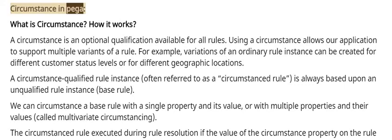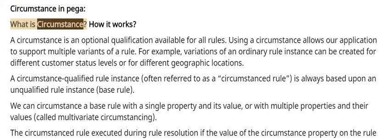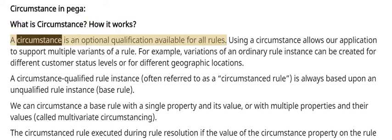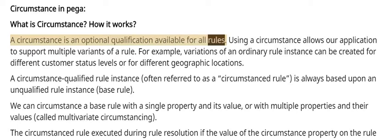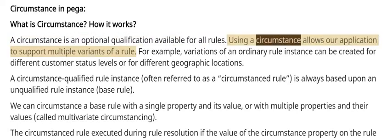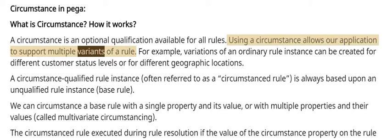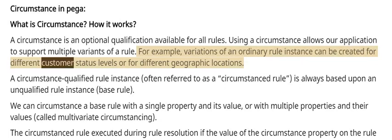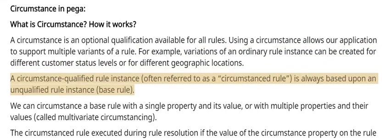Circumstance in PEGA. What is a circumstance and how it works? A circumstance is an optional qualification available for all rules. Using a circumstance allows our application to support multiple variants of a rule. For example, variations of an ordinary rule instance can be created for different customer status levels or for different geographic locations.